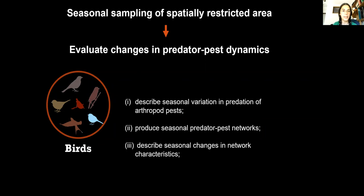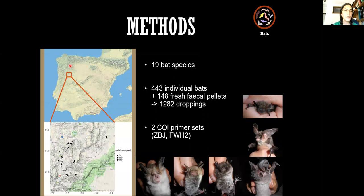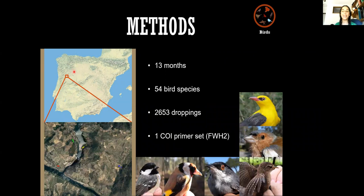For bats sampling was made in northeast Portugal within the Sabor river basin. We captured almost 500 individual bats belonging to 19 different species plus we collected over 100 fresh fecal pellets from known roosts, extracting DNA from over 1,200 droppings. We used two COI primers ZBJ and fwhF2 to amplify the insect DNA present in the feces. For birds sampling was also conducted in northeast Portugal but at the catchment area of the Tua river. We have four sampling sites that were sampled every month. In total we captured 50 different bird species and over 2,600 droppings were collected and their DNA extracted. This time we used only fwhF2 primer sets to get the insect DNA.